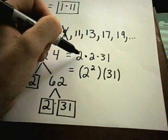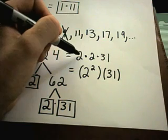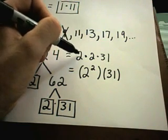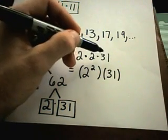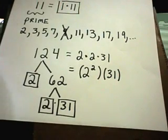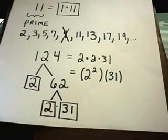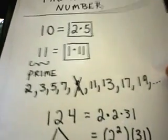This factored form is sometimes known as the prime factorization, because every number I'm left with, since I can't break it down any further, those will by definition be prime numbers. Let's do maybe one more here. This is really the gist to factoring a number.